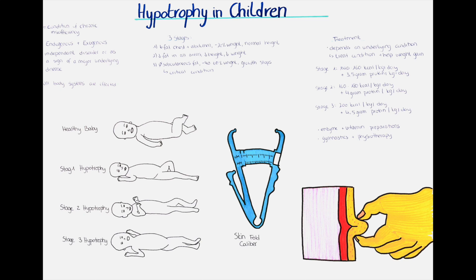In stage 1, the subcutaneous fat is reduced in the area of the chest and abdomen. The height is normal but the weight is 20% less than the mean weight for the child's specific age and gender. In stage 2, the subcutaneous fat tissue continues to decrease in all areas of the body including the limbs, and both height and weight are below the normal range. In stage 3, the most severe stage, the subcutaneous fat tissue becomes so little that it basically disappears. Growth comes to a stop and weight is around 40 to 60% below the mean for the respective age and gender.